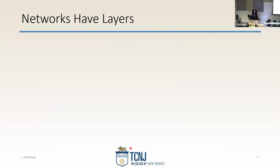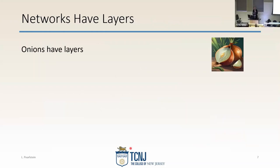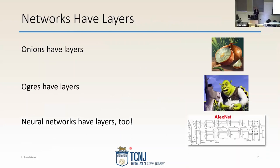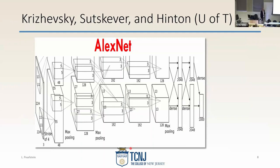Networks have layers. As we all know, onions have layers — and ogres have layers. Neural networks have layers too. Here's a picture of AlexNet. Networks today are actually vastly more complex than AlexNet, but let's look at it: RGB images come into the network, and AlexNet was designed to take images in at 224 by 224 pixels — medium resolution, sufficient to win the ImageNet competition.